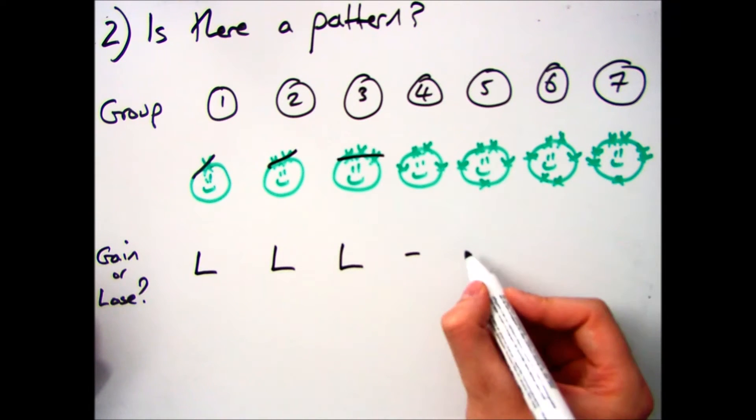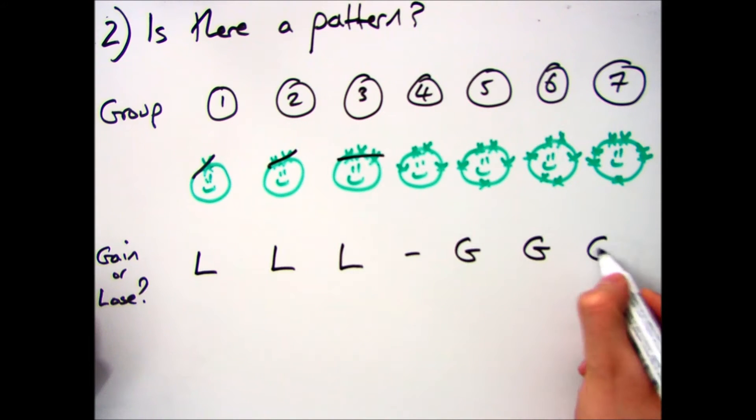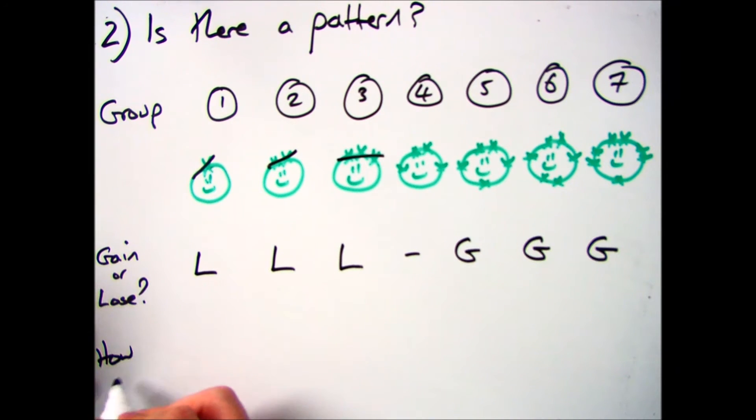Groups 5, 6 and 7 are the opposite way round because it's easier to gain them. So the next question is, how many do they want to lose, and how many do they want to gain?